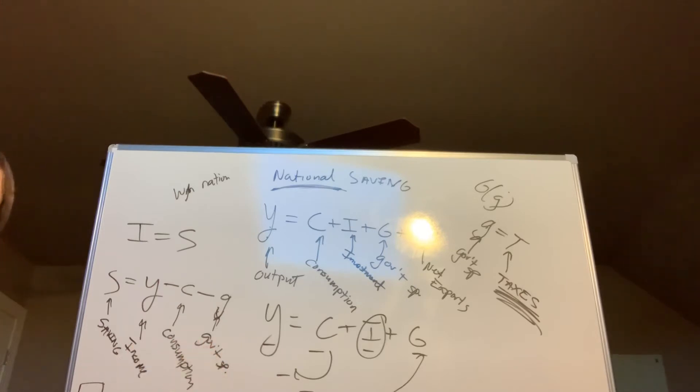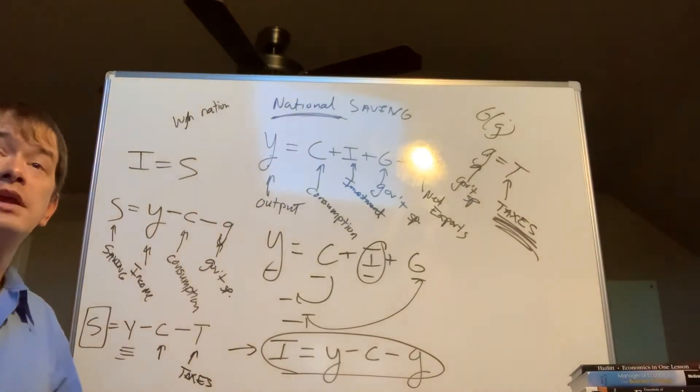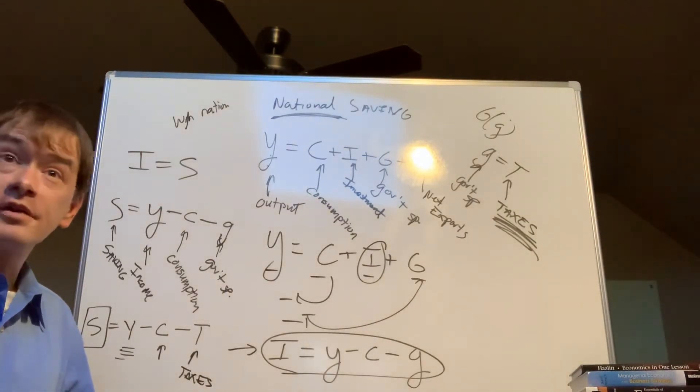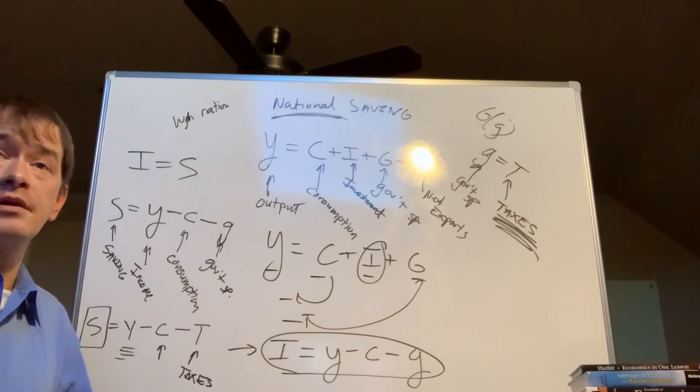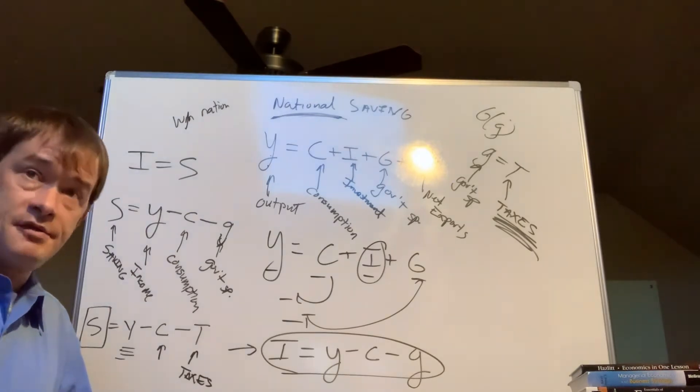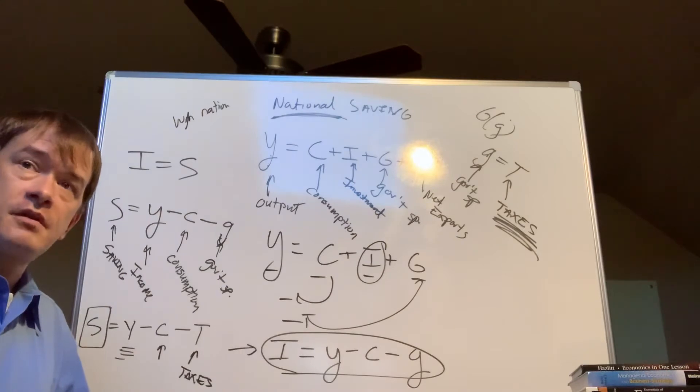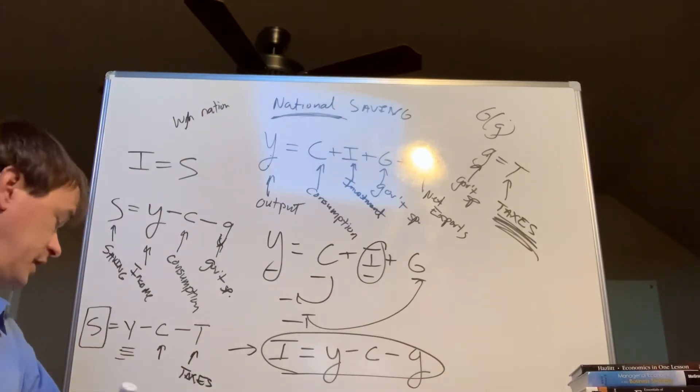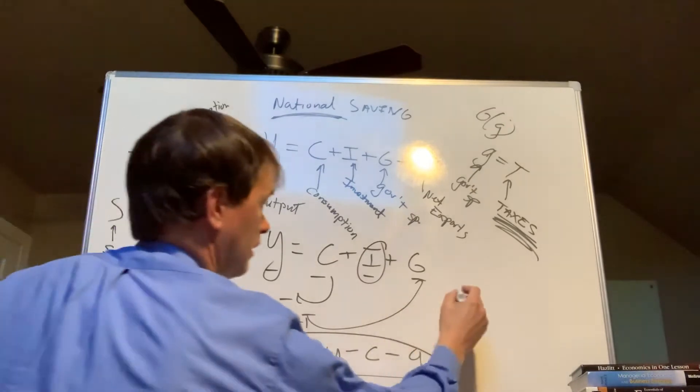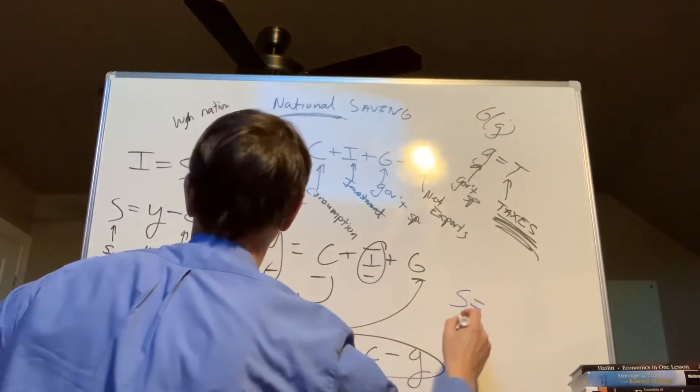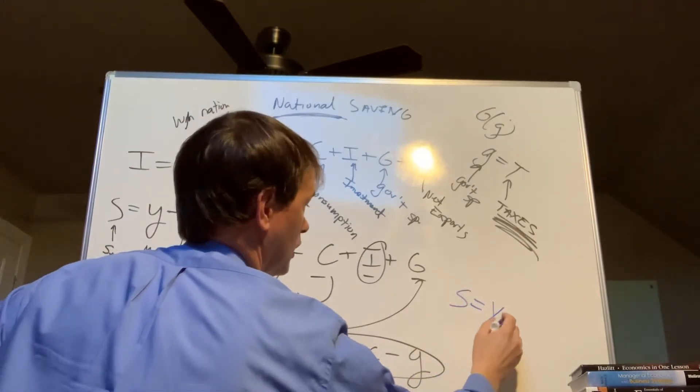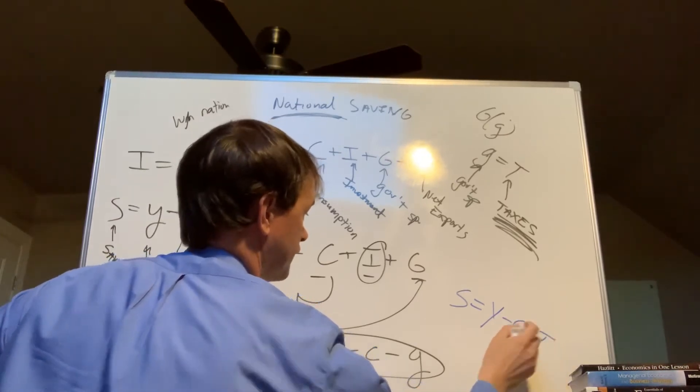But whatever is left over of Y after taking out C and taxes is what you can save. So keep in mind S equals Y minus C minus T, your national saving, if we added that up. So it's true for Jonathan. It's true for every person out there watching this video. Whatever you save, it comes out of whatever discretionary income you have left over after buying everything you're going to buy that you have to buy and paying your taxes. So that's national saving.